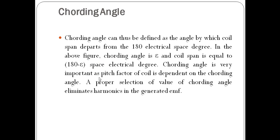Chording angle is very important as the pitch factor of the coil is dependent on the chording angle. A proper selection of the value of chording angle eliminates harmonics in the generated EMF. The chording angle is the angle by which the coil span departs from 180 electrical space degrees — note this is the electrical angle, not the mechanical angle. The EMF generated in any electrical machine is directly proportional to pitch factor, so by a proper selection of chording angle we can eliminate harmonics from the generated EMF of the machine.